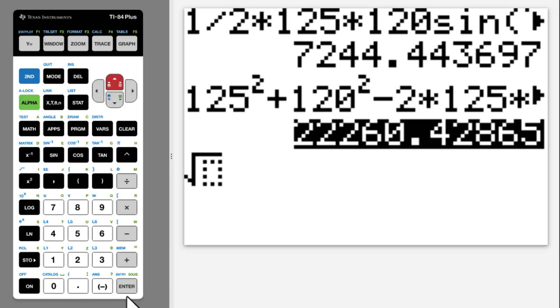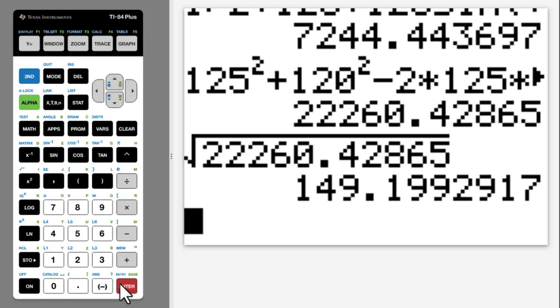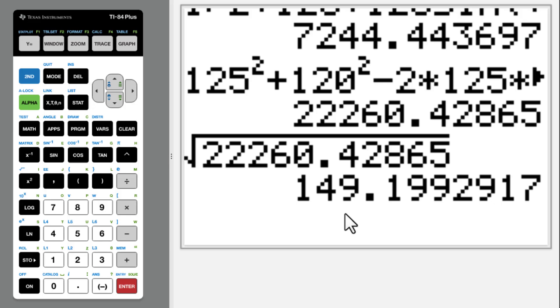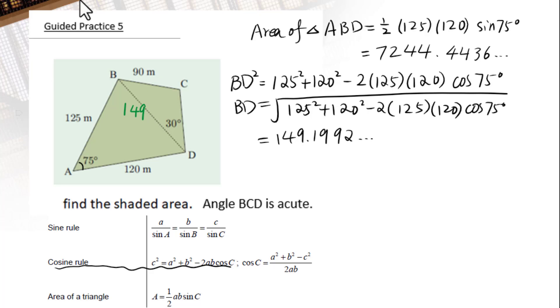Take the square root of the answer. 149 as a 3 sig fig. Since this is not the final answer to this question, we'd better use the exact value that is 149.1992 and so on. We need included angle for this formula.